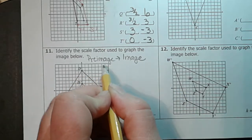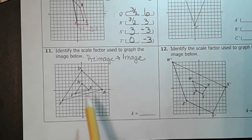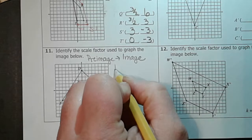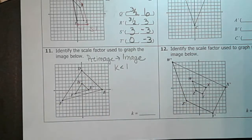Did it get bigger or smaller? Well, the pre-image is this larger one and it got smaller, so it's a reduction. So we can automatically assume K is less than one. K is going to be some number between zero and one on the number line. So when we figure out our answer, we can check it to make sure it should be between zero and one.